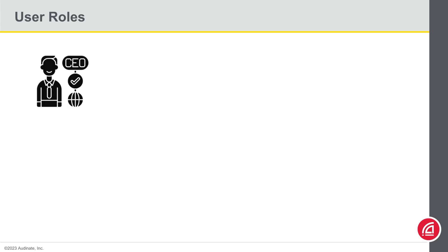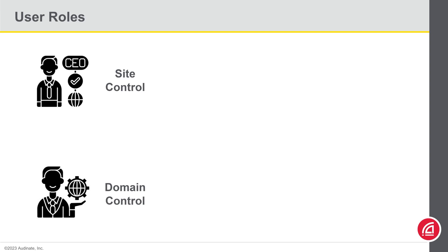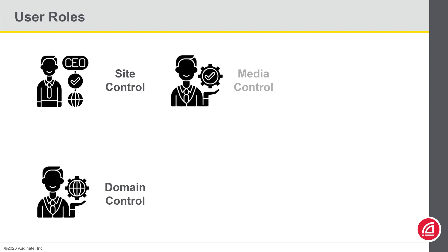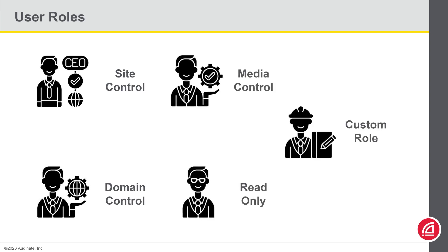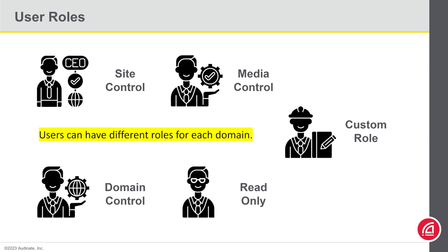Let's take a look at user roles. Users can be assigned to one of four default roles, which are site control, domain control, media control, and read-only. We can also create custom roles. Each of these roles gives users different levels of access to your system. User roles are not necessarily defined for an entire DDM system — it can be done on a per-domain basis.